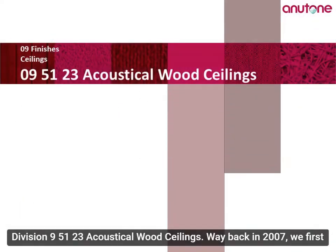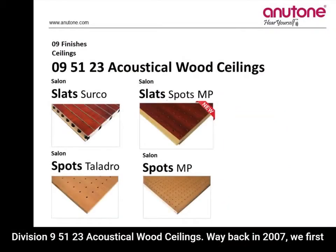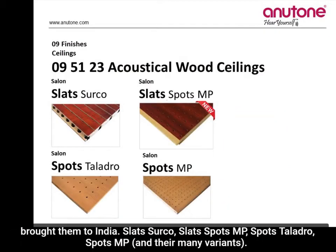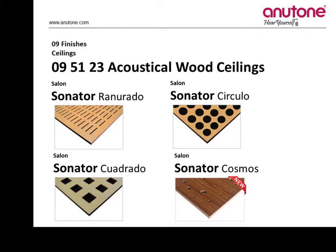Division 9, 5123 — Acoustical Wood Ceilings. Way back in 2007, we first brought them to India: Slat Circle, Slat Spots MP, Spots Taladro, Spots MP. And in the Megaperfs, to continue — Sonator Ranurado, Sonator Circulo, Sonator Cuadrado, Sonator Cosmos — the new one.